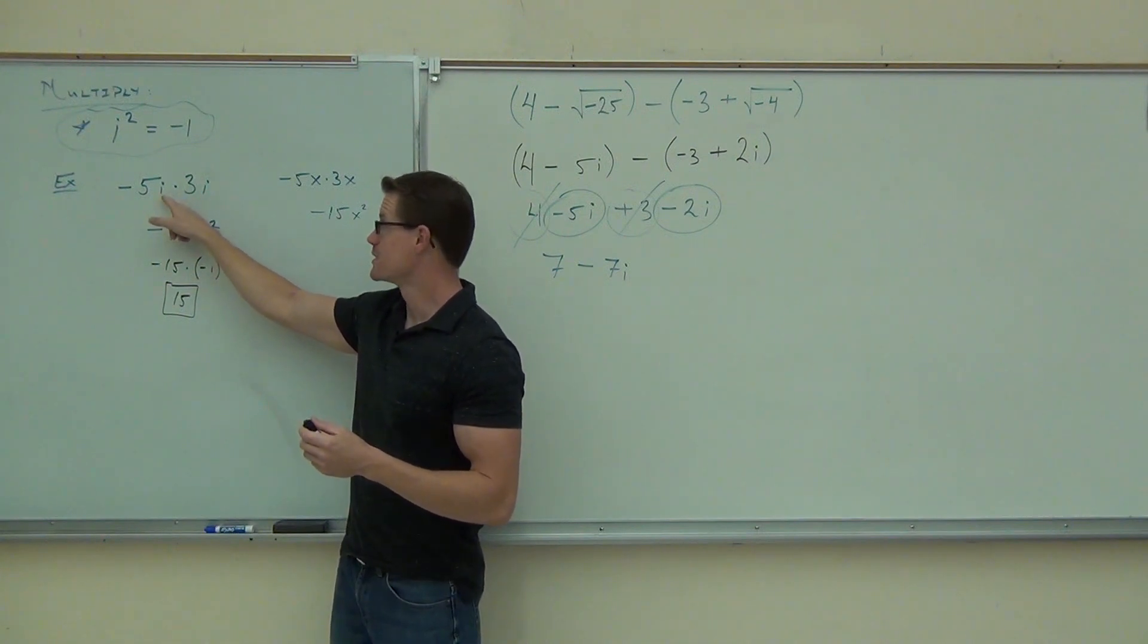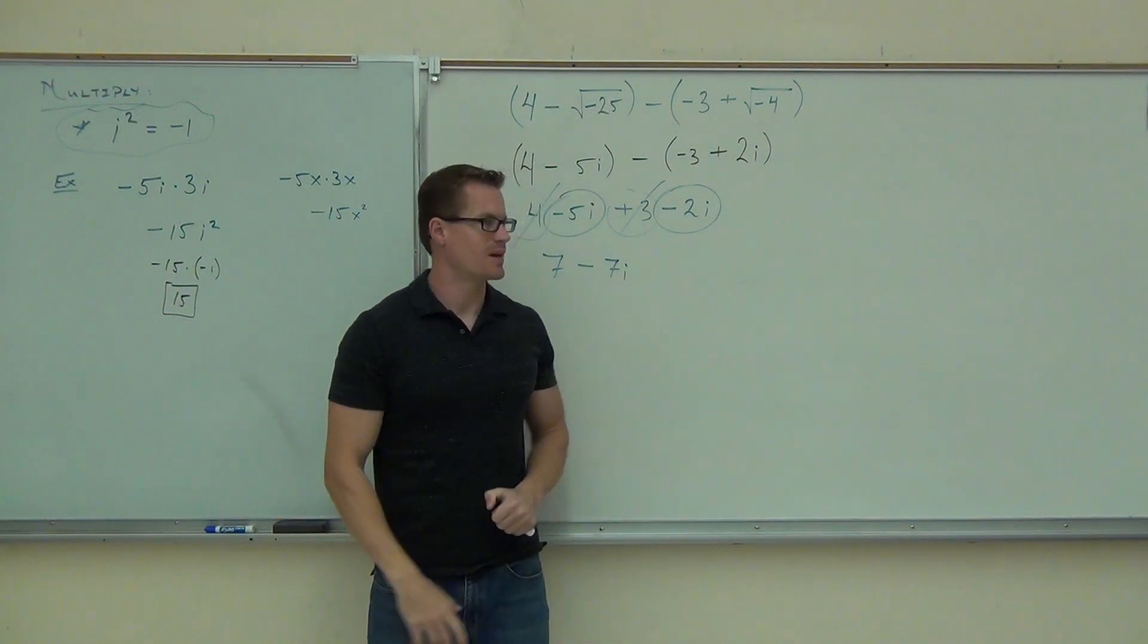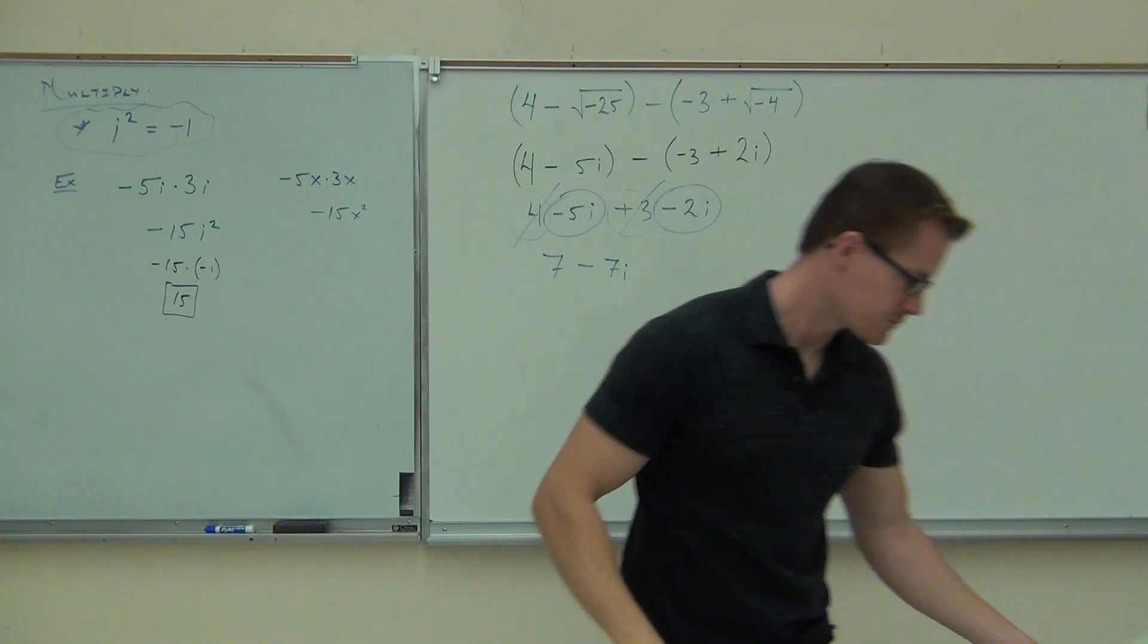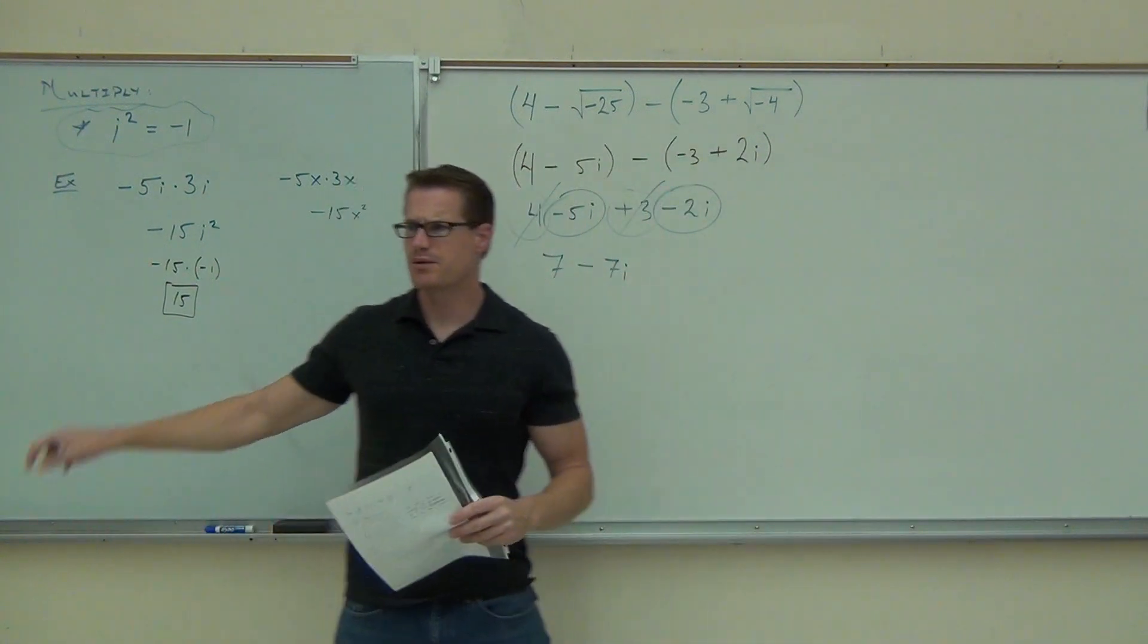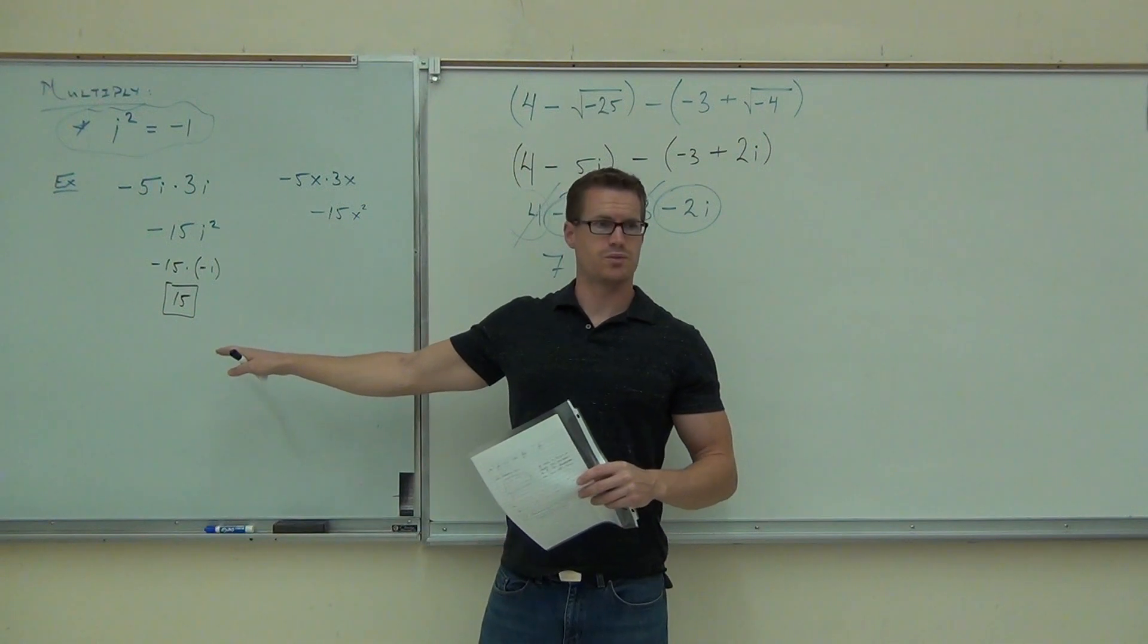A square root times itself. What does a square root times itself do? It gets rid of the square root. That's why we do this. That's why this happens. We're going to use this idea in division in just a little while. Do you feel okay with our example up here, why we get positive 15 out of that? Yes or no? Yes.